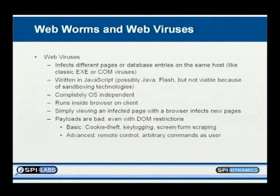Even with these restrictions, payloads are still bad. With JavaScript I can steal your cookies — which means I just hijacked your session; from Amazon's perspective I am now you, filling your shopping cart. I can keylog you, scrape form values, steal usernames and passwords. From an advanced standpoint, check out Cross-Site Scripting Proxy by Anton Rager — basically a way to make browser botnets. Jeremiah gave an excellent presentation about port scanning, stealing browser history, and massive ownage. There's all sorts of stuff you can do.